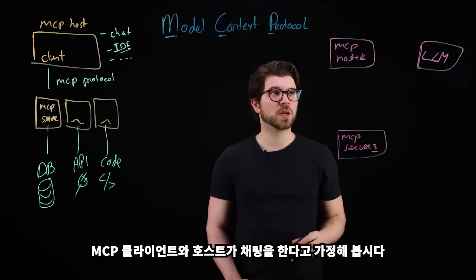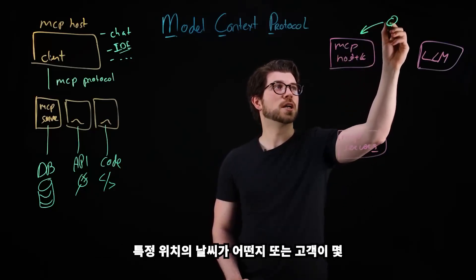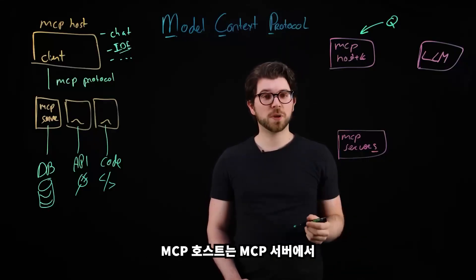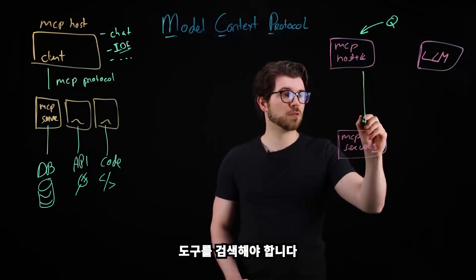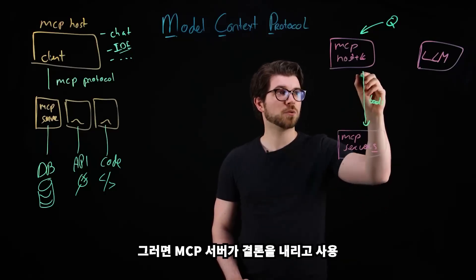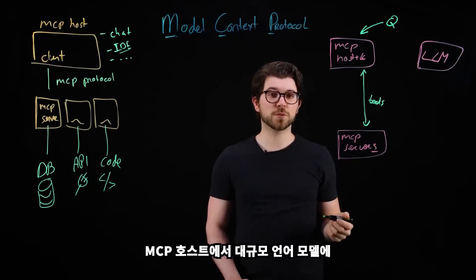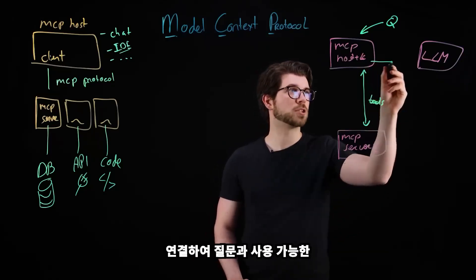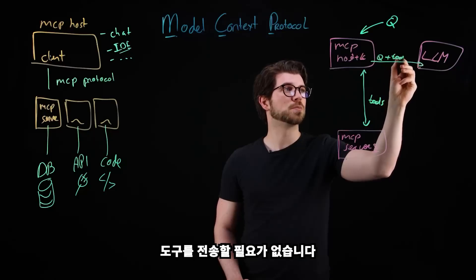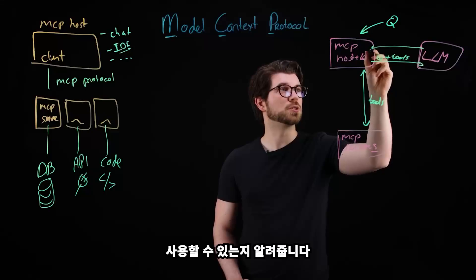Let's assume our MCP client and host is a chat app. You ask a question such as, what is the weather like in a certain location, or how many customers do I have? The MCP host will need to retrieve tools from the MCP server, which will respond with the available tools. From the MCP host, you then connect to the large language model and send over your question plus the available tools. If all is well, the LLM will reply and tell you which tools to use.